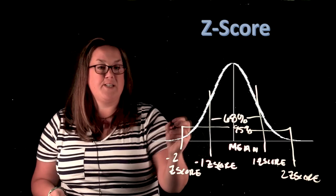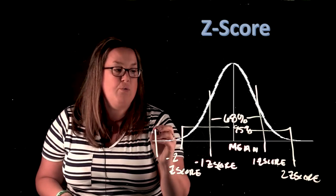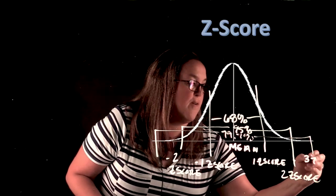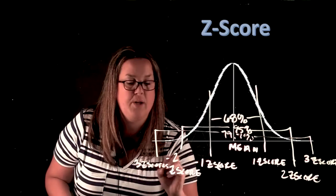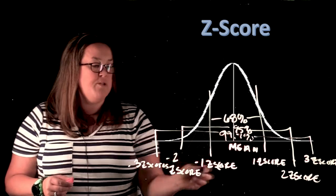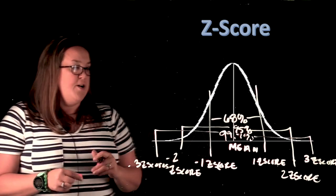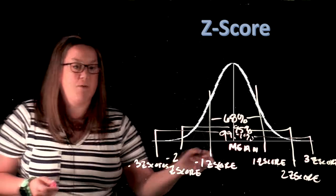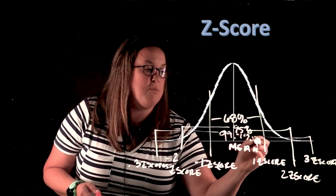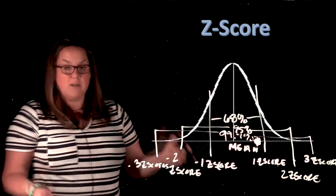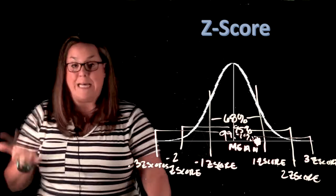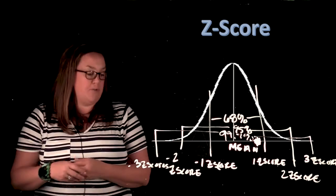And then if we went out three z-scores, just like we had with the empirical rule, that would be 99.7% of data would be within three z-scores. And again, that would be negative because it would be below. Now the point of this, again, is because you're not always going to be exactly the three, two, or one. So for example, me at 0.74, I would be somewhere between the mean and that one z-score. So I would be somewhere in this area. But the z-score is beneficial in that it measures the distance and direction from the mean in standard deviations, so how many standard deviations away are you?